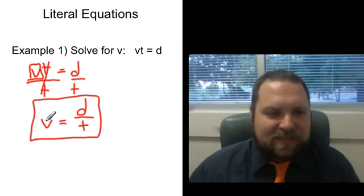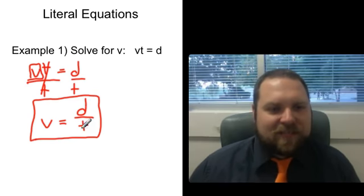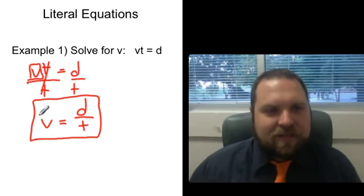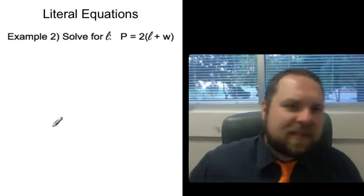So this is my literal equation solved for v. And remember, it has meaning. This tells us that to find speed, all we have to do is take our distance that's traveled, divided by the time that it took to travel.